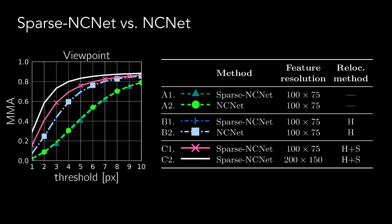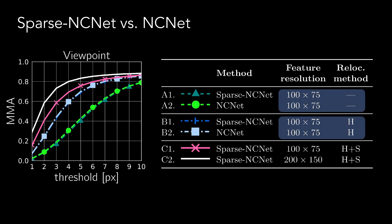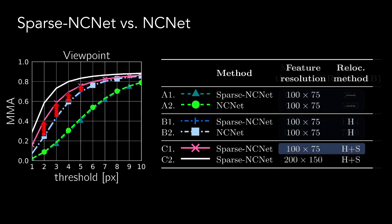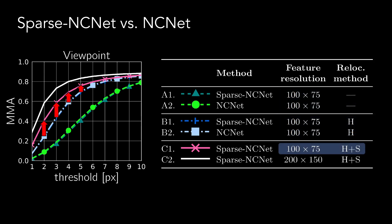We first compare the performance of our method against NC-Net using the same feature resolution and relocalization approach. Results show that Sparse NC-Net obtains significant speedups and memory savings, while producing equivalent matching results. In addition, the proposed two-stage relocalization module brings additional improvements in the matching performance.